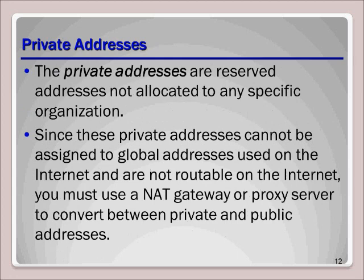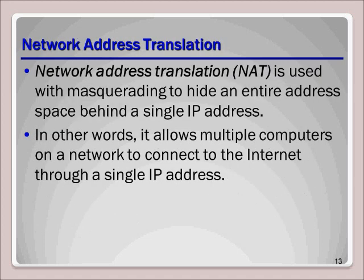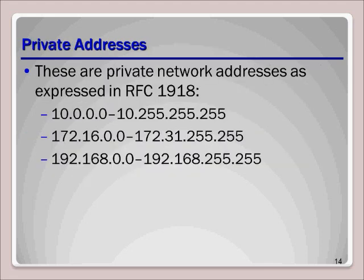Using private addresses and NAT: another method to extend the use of IPv4 public addresses is to set aside some addresses for private use. Private addresses can be used by any organization, but are not routable through the internet. To connect these computers to the public network — the internet, for example — you would use Network Address Translation, also known as NAT. You should be able to see a private address and identify it as a private address. Here is a list of private addresses which you should memorize.